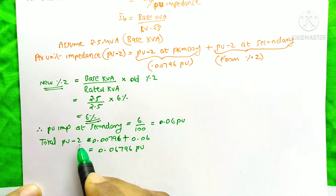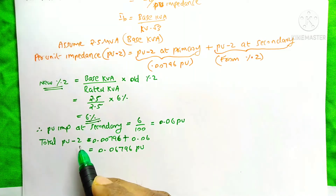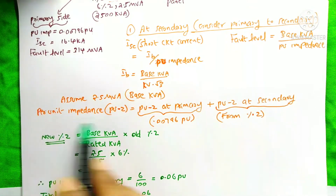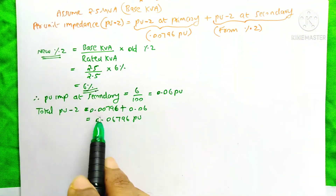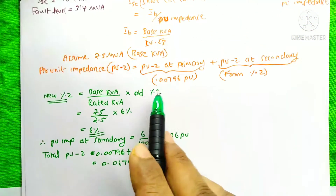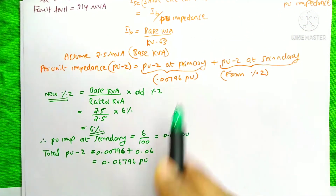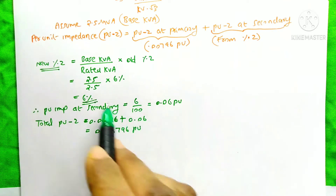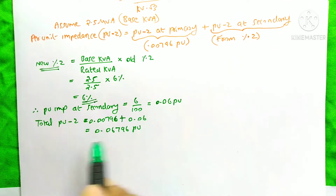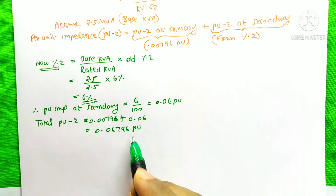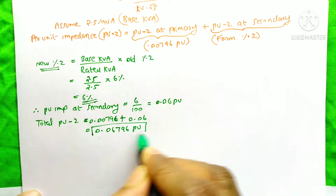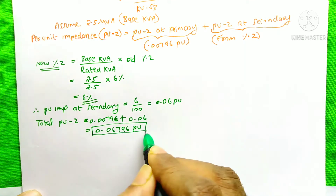The total per unit impedance is 0.00796 plus 0.06, which equals 0.06796 per unit impedance. This is the total per unit impedance at the secondary side.